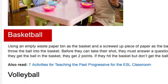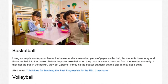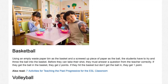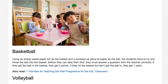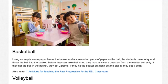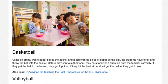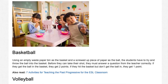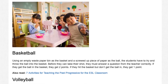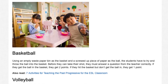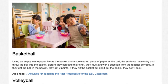Basketball. Using an empty waste paper bin as the basket and a screwed up piece of paper as the ball, students have to try and throw the ball into the basket. Before they can take their shot, they must answer a question from the teacher correctly. If they get the ball in the basket, they get two points. If they hit the basket but don't get the ball in, they get one point.